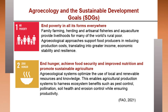SDG 1 is no poverty. Family farming, herding and artisanal fisheries and aquaculture provide livelihoods for many of the world's rural poor. Agroecological approaches support food producers in reducing production costs, translating into greater income, economic stability and resilience.